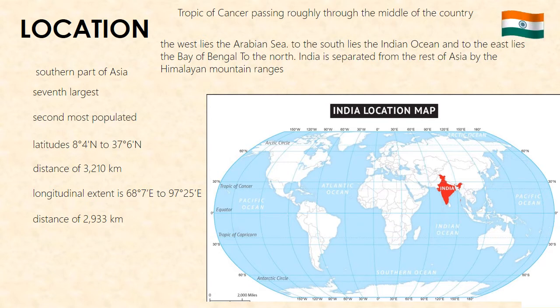The countries which border India include Pakistan to the west, Afghanistan to the northwest, China, Nepal and Bhutan to the north and northeast, and Bangladesh and Myanmar to the east. To the south, across the Palk Strait, lies the island country of Sri Lanka.